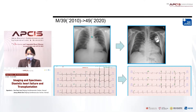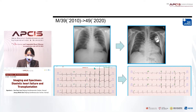Over 10 years, the cardiomyopathy worsened, and an ICD was inserted in 2015. On EKG, LV voltage was initially increased, but over 10 years, LV voltage declined.